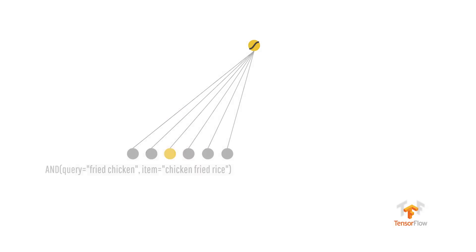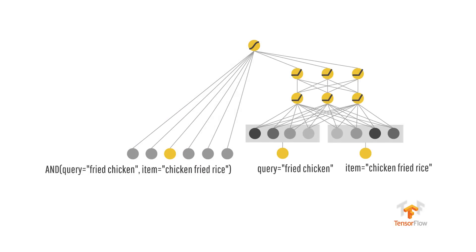However, sometimes memorizing specific combinations as rules and exceptions is very important. When people ask for iced decaf latte, you don't really want to overgeneralize and give them hot latte, no matter how close they are in the embedding space. So by jointly training wide and deep models, we actually allow them to complement each other's strengths and weaknesses.